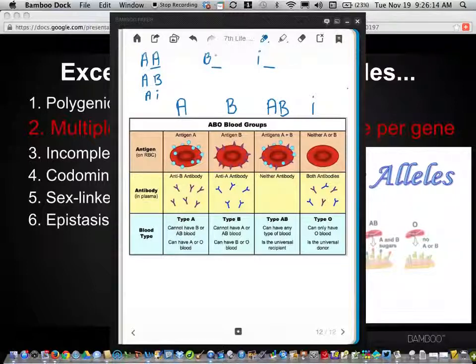Likewise, with the B allele, B could be paired with another B allele. B could also be paired with A, which is equal to this. These are the same thing. Or B could be paired with a small case i.